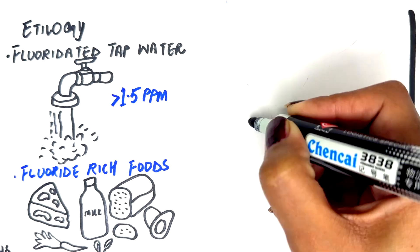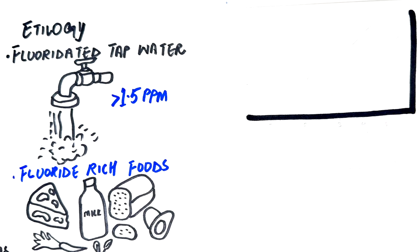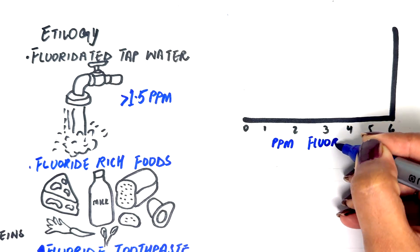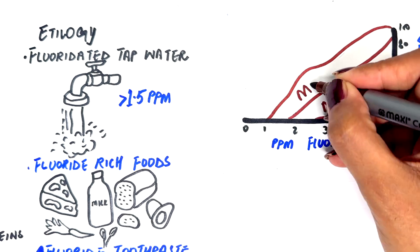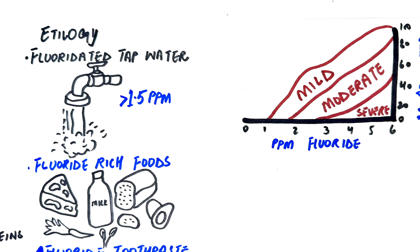Fluorosis can be mild, moderate, or severe. As shown in this graph, mild fluorosis affects the largest portion of the global population compared to moderate or severe fluorosis. While mild fluorosis may still offer some protection against cavities, moderate and severe fluorosis can leave teeth weaker and more vulnerable to decay.